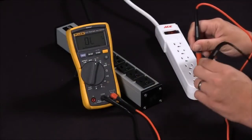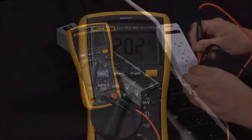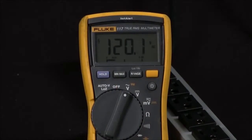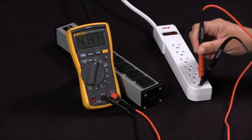Now if I go ahead and move that ground over to the neutral side I'm getting 120 volts. If I go back to my ground to hot I'm at 4 volts.